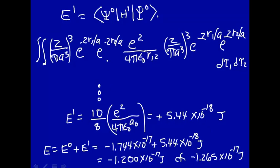Sometimes the integrals get a little hairy. There are a couple of ways to do that: one is to expand in spherical harmonics; the other is to recognize from electricity and magnetism that this is a charge distribution running out as a sphere, and you have overlapping charges — classical electricity and magnetism can solve this also. Without going into those details, there's a first-order correction, and it looks like it worked pretty well.